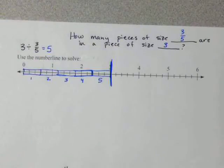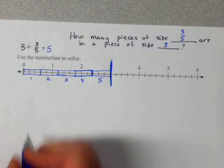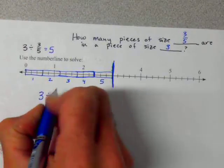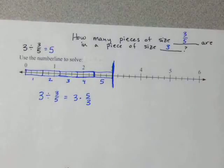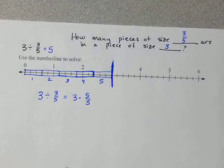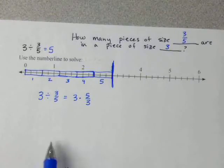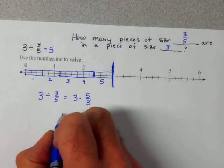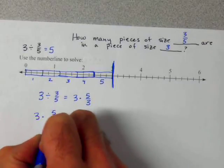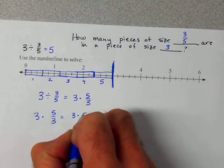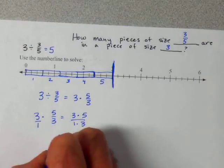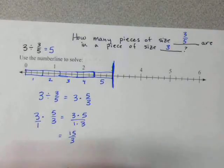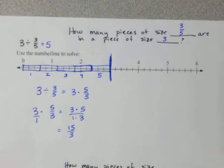So how does this fit with what many of us — students included — know about the standard algorithm? We've often been taught that 3 divided by 3 fifths is the same as 3 times 5 thirds. Why is it 5 thirds? We could multiply this out: 3 times 5 thirds is 3 times 5 over 1 times 3, which comes out to be 15 thirds, which simplifies down to 5. So the answer is 5.